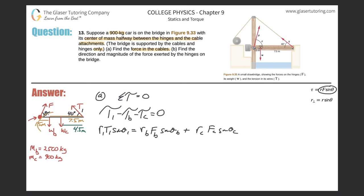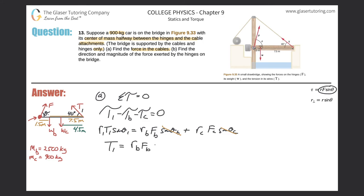Looking at the picture, all of the forces form right angles, so all those sine terms cancel out because sine of 90° equals 1. Our goal is to solve for T₁, so I can divide out R₁ and sinθ₁. Therefore: T₁ = (R_B·F_B + R_C·F_C) / (R₁·sinθ₁). And this is our working formula — now we can calculate.